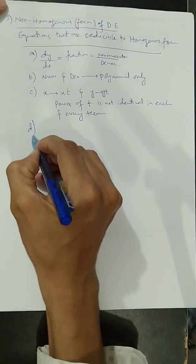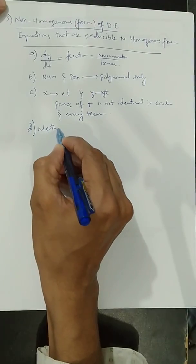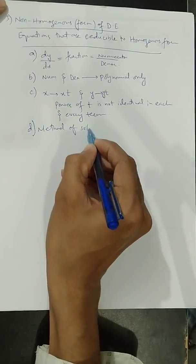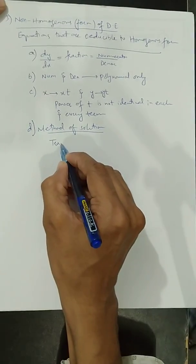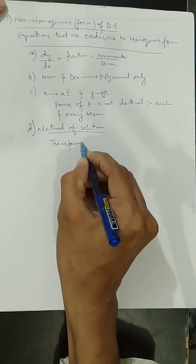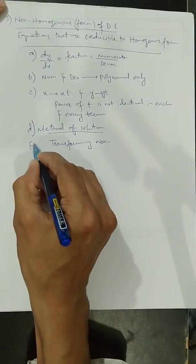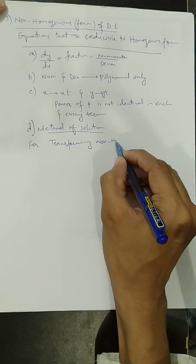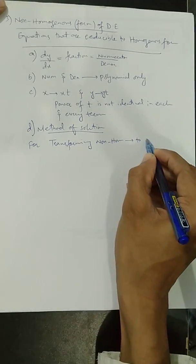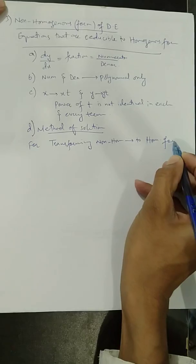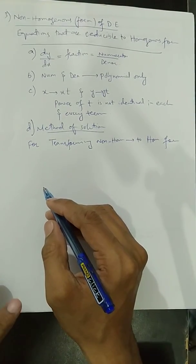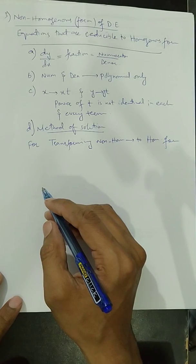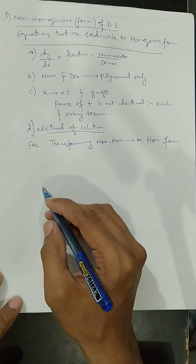Now, let's discuss the method of solution — the method by which we can transform a non-homogeneous first order differential equation to a homogeneous form.